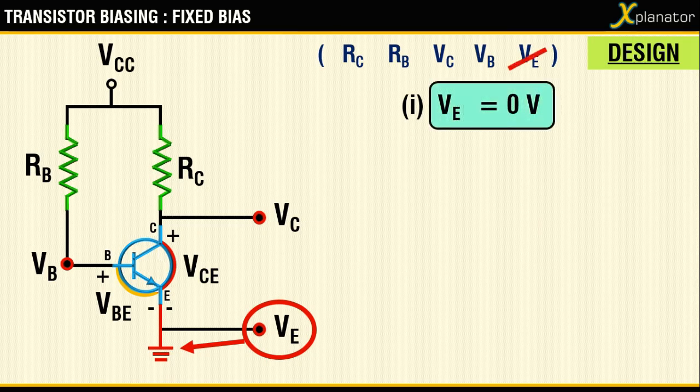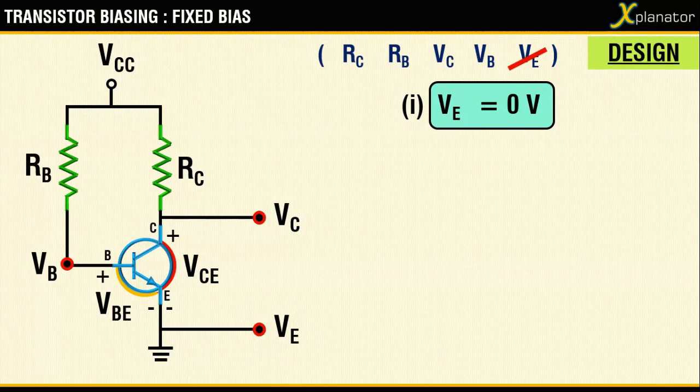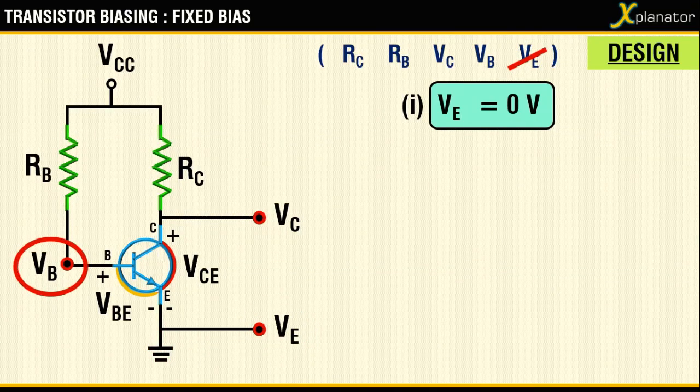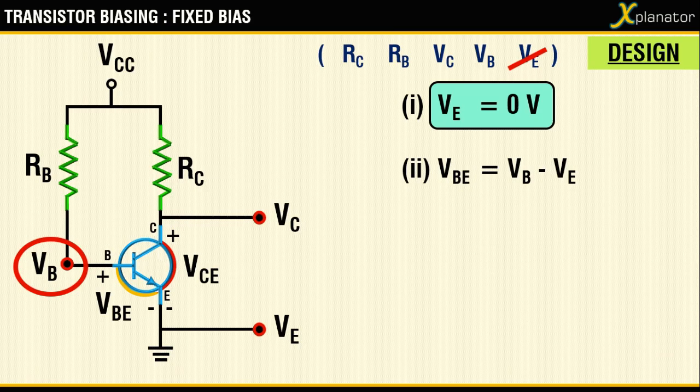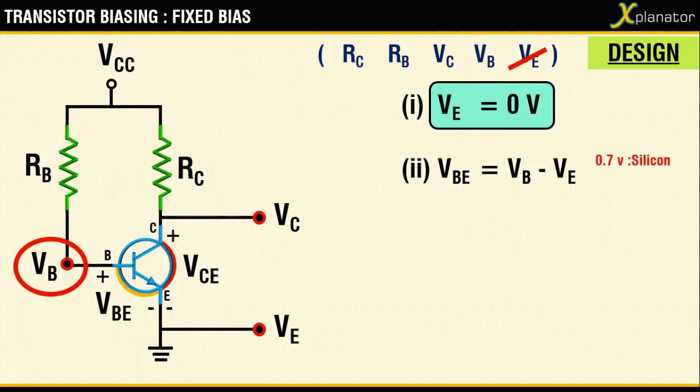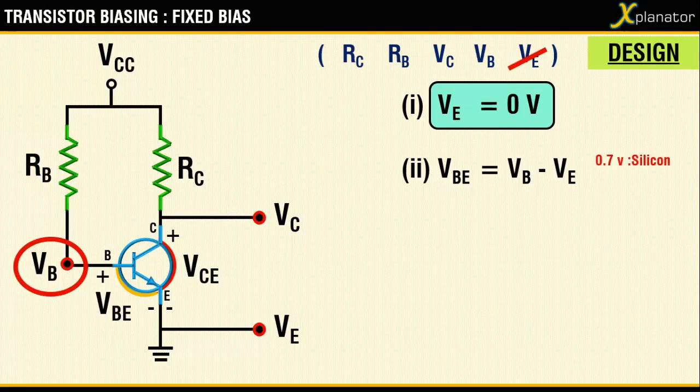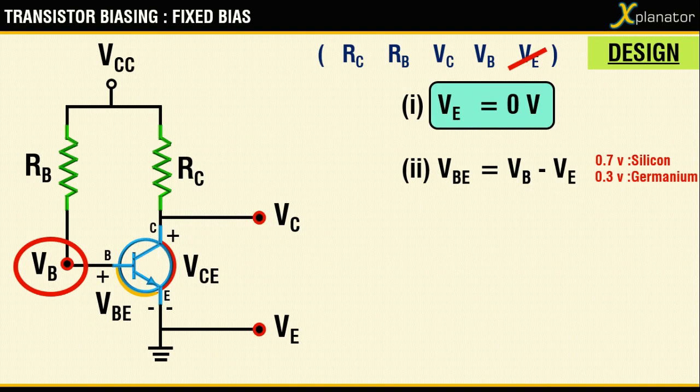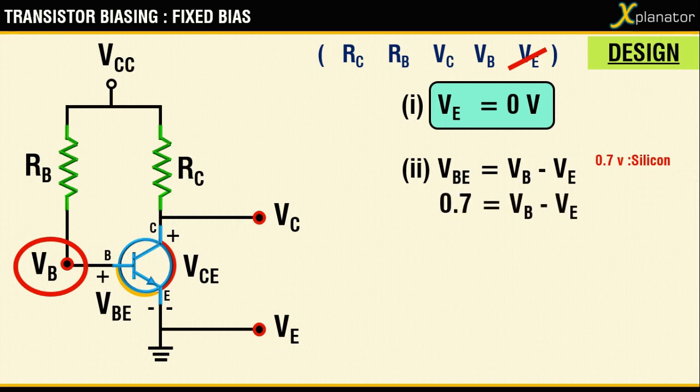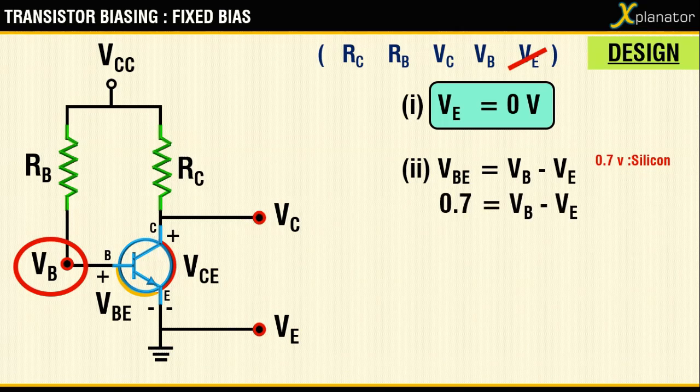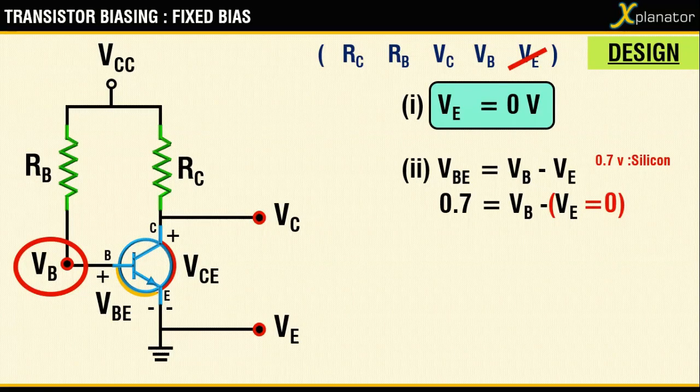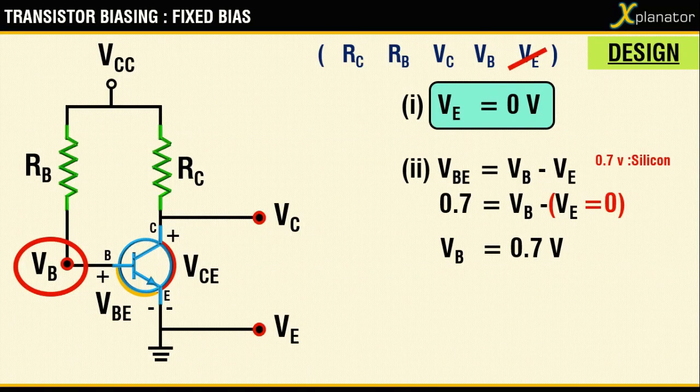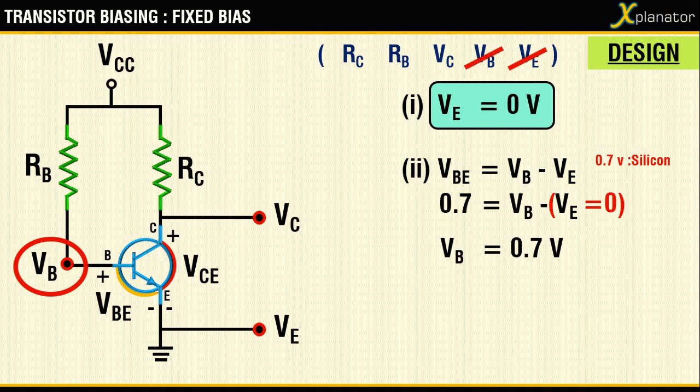The second parameter, that is VB, is written as VBE equals VB minus VE. The value for VBE is 0.7 volts if it's a silicon transistor and it is 0.3 volts if it's a germanium transistor. The one which we are considering here is silicon, so we write the value as 0.7. And from expression 1, you know that VE already equals 0, hence VB is written as 0.7 volts, and that is the second unknown parameter which we just found a value for.